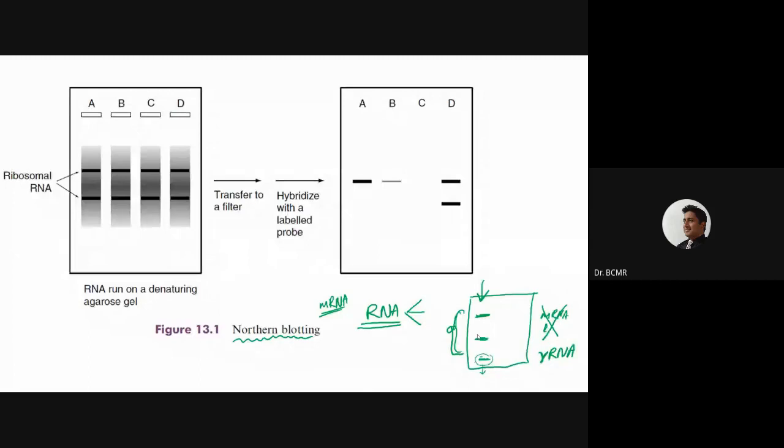mRNAs cannot be visualized directly on agarose electrophoresis, especially because mRNAs have different sizes - some of them are long - and each of them has different copy numbers. So you cannot directly visualize them as distinct bands.